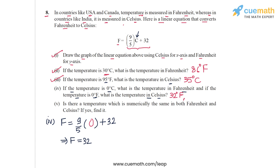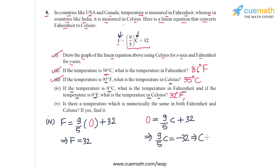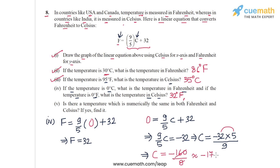Second, if the temperature is 0°F, what is it in Celsius? Substituting F = 0: 0 = 9/5 × C + 32, giving 9/5 × C = −32, so C = −32 × 5/9 = −160/9, which is approximately −17.8°C. So 0°F corresponds to approximately −17.8°C.